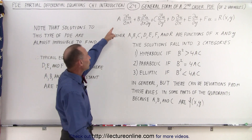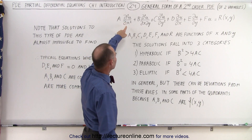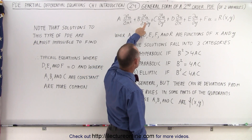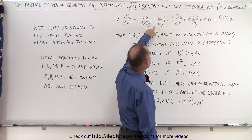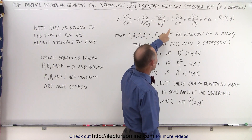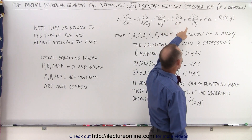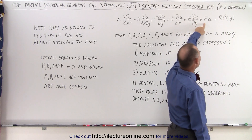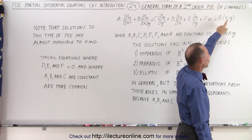Here is the general equation: A times the second partial derivative of U with respect to X, plus B times the second partial derivative of U with respect to X and Y, plus C times the second partial derivative of U with respect to Y, plus D times the first partial derivative of U with respect to X, plus E times the first partial derivative of U with respect to Y, plus F times U equals some function of X and Y.